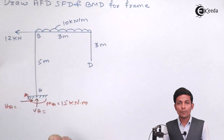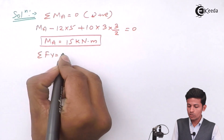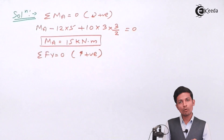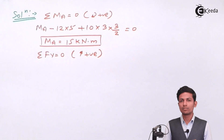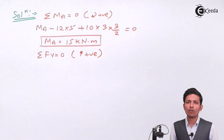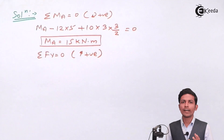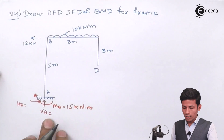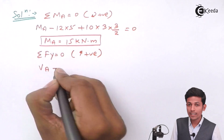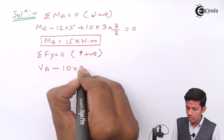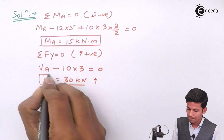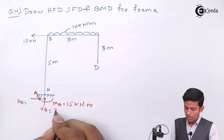Now applying ΣFy = 0 with upward as positive. In structural analysis, always solve moment first, then ΣFy, then ΣFx. VA (upward, positive) minus the UDL resultant 10 × 3 = 0, giving VA = 30 kN upward.